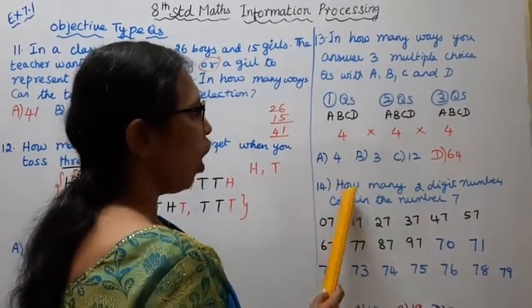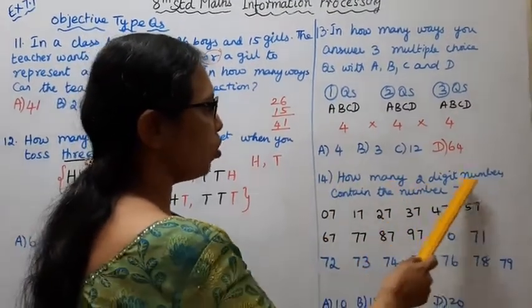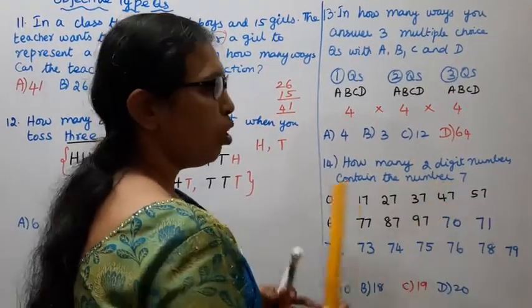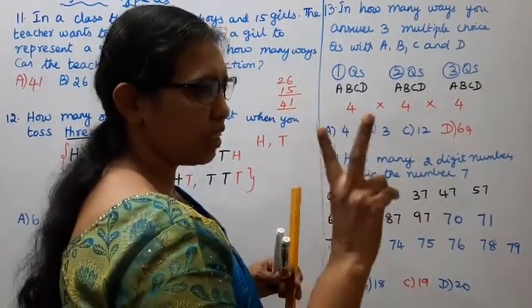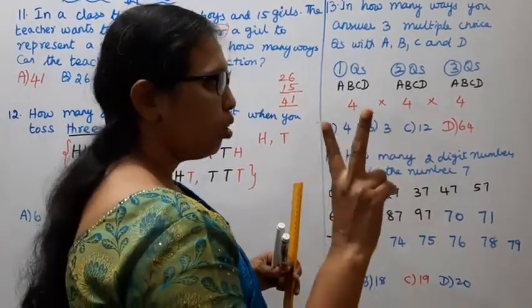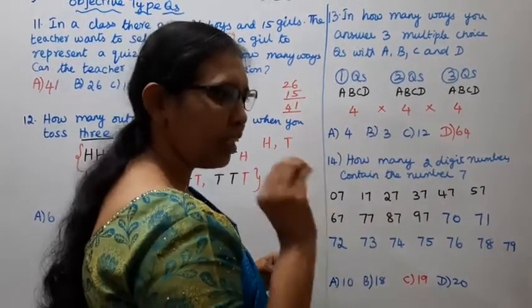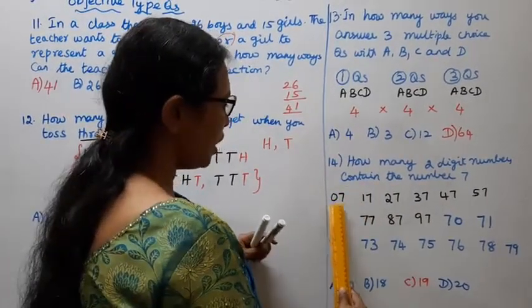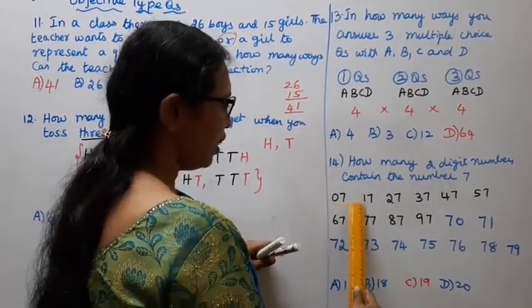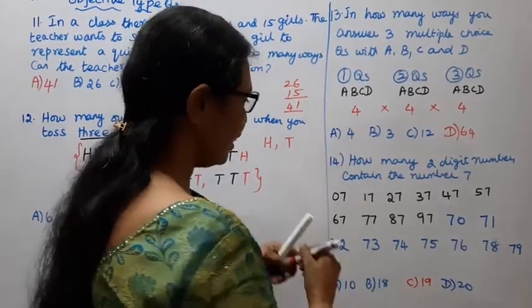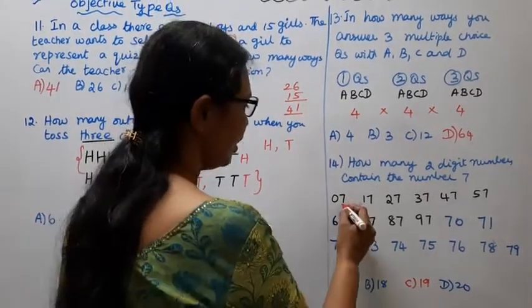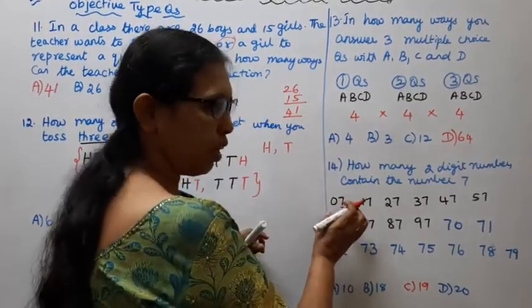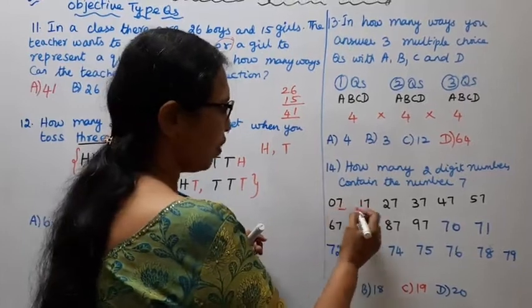Question 14: How many 2-digit numbers contain the digit 7? We need to list all 2-digit numbers that have the digit 7 in them.